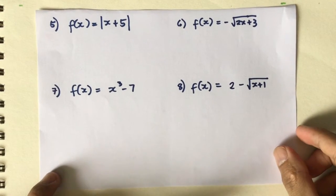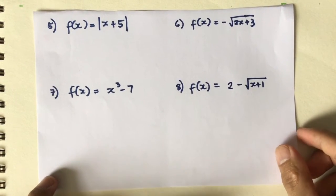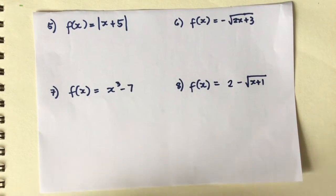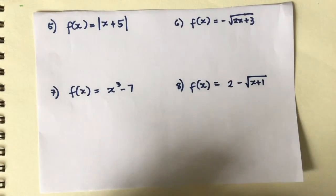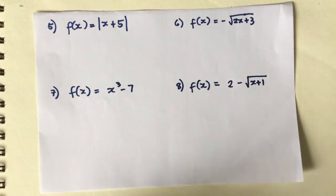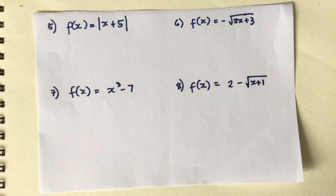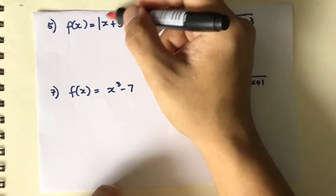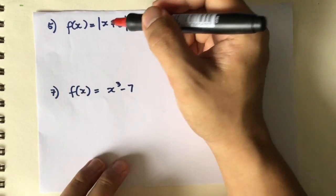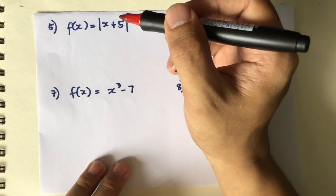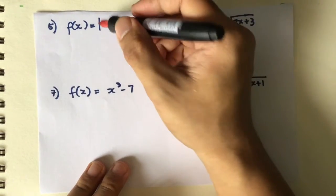In this set of equations, we have f(x) equal to absolute value of x plus 5. When you say absolute value, it's the distance of a certain coordinate from 0, so remember there are no negative distances, which means the resulting value here is always positive.